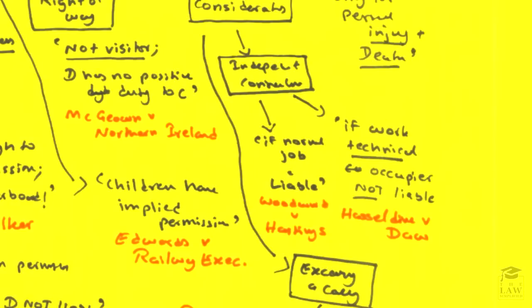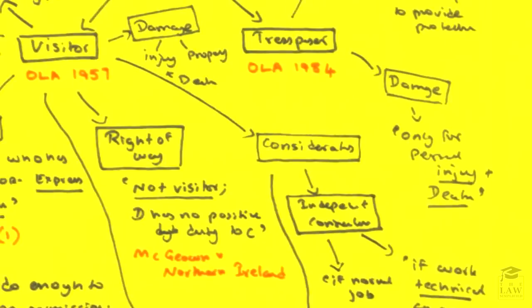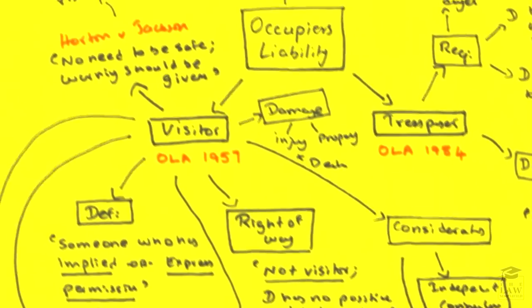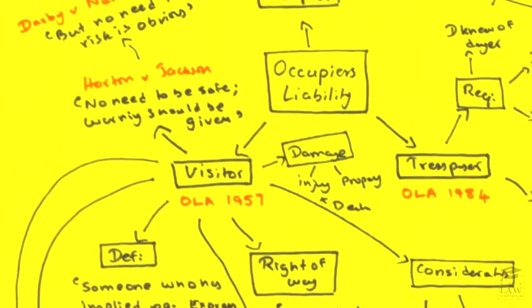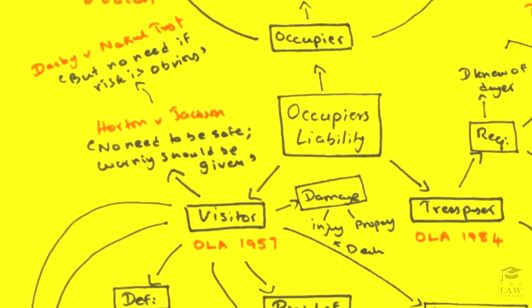According to the Occupier's Liability Act of 1957, a successful claimant is eligible to receive damages for injury or death as well as damage to property. It is an important aspect of the Occupier's Liability Act of 1957 that damages are afforded for damage or loss of property, and you will understand why when we have a look at trespassers.